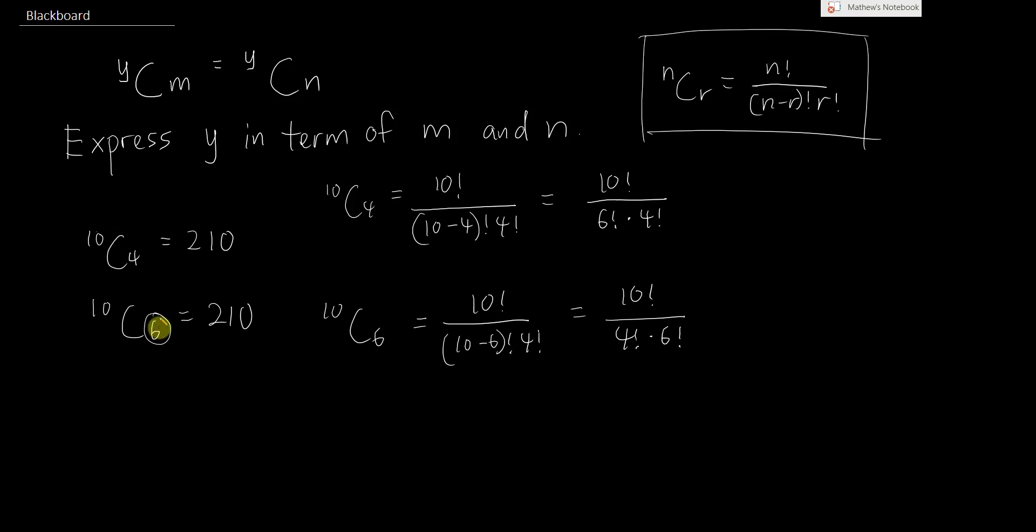So 10 minus 4, so that's mean if I want to get a connection between them, I know m basically equals to y minus n. All right, so if y in terms of m and n, then y will just equals to m plus n.